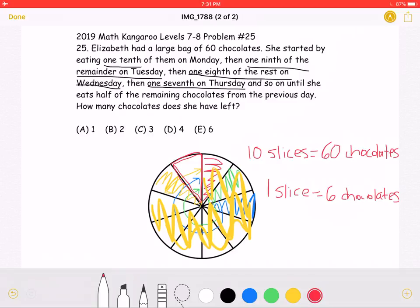then one slice, this one remaining slice, would be equal to six chocolates, meaning that answer choice E, six, must be correct.